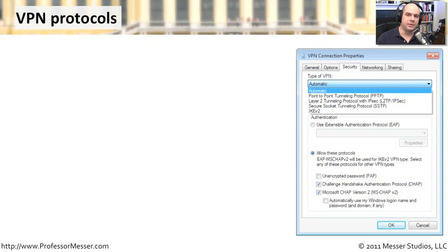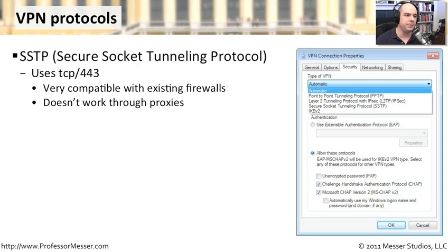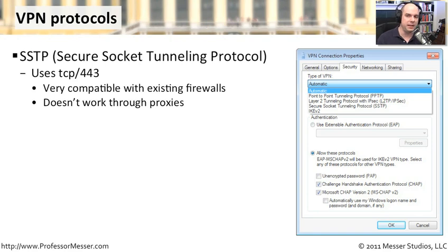If you're integrating Windows 7 with a third-party VPN solution, you may not have the luxury of using IKEv2, so Windows supports other VPN protocols. One of these is SSTP — Secure Socket Tunneling Protocol — which uses TCP over port 443, the same port used for secure web connections. This makes it very easy to use through firewalls that allow TCP port 443. However, SSTP does not work through proxies, as proxies stop a connection and create their own, which SSTP's more secure tunnel design does not allow.